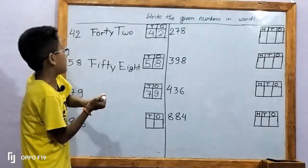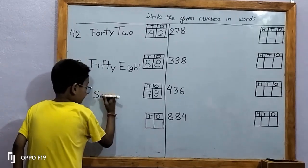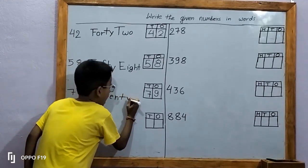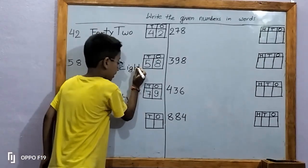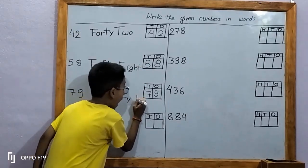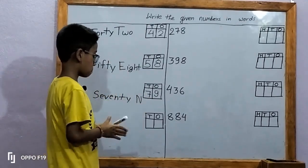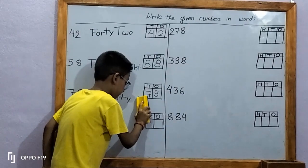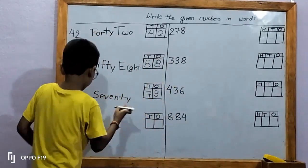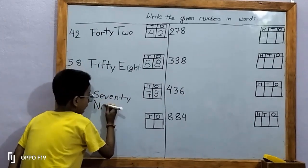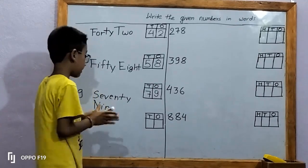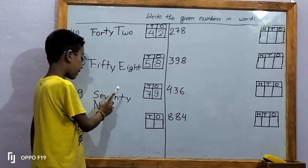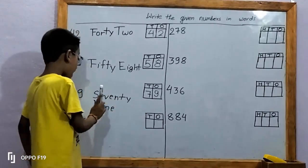Let's write in words. S-E-V-E-N-T-Y, seventy. N-I-N-E, nine. 79. Let's spell 79: S-E-V-E-N-T-Y, 70, N-I-N-E, 79.